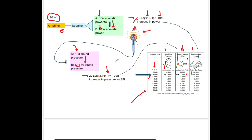We have a 10 decibel increase in SPL, which is an increase in sound pressure. Likewise we also have a 10 decibel increase in sound intensity, but what really matters is SPL because that's what microphones measure. So we have a 10 dB increase — what does that amount to in perception? We perceive that 10 dB increase as the sound being twice as loud.